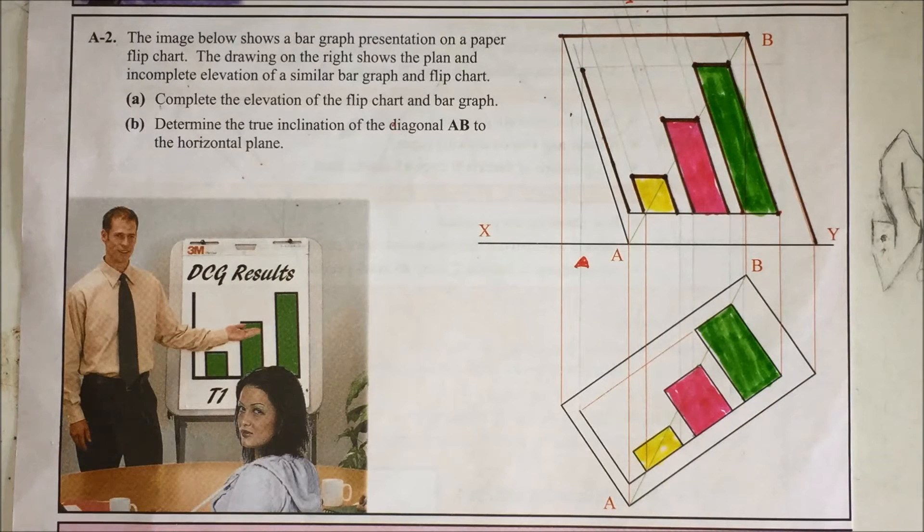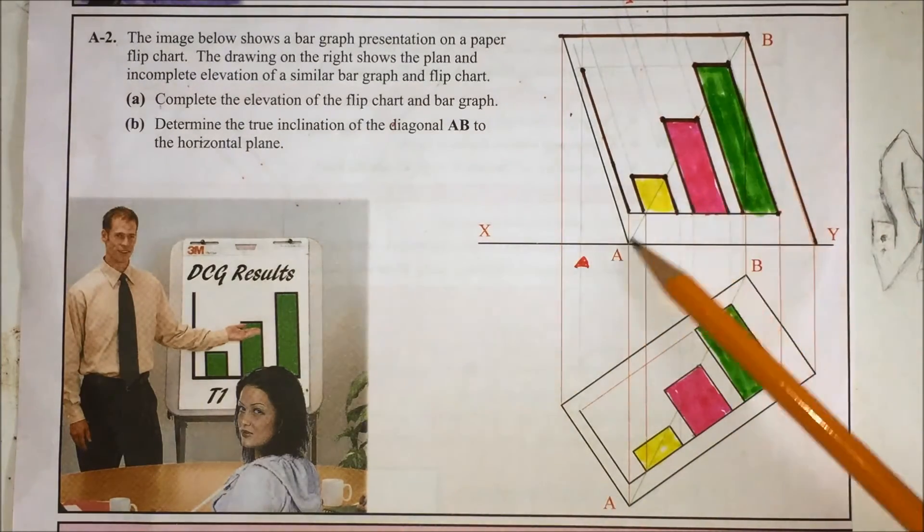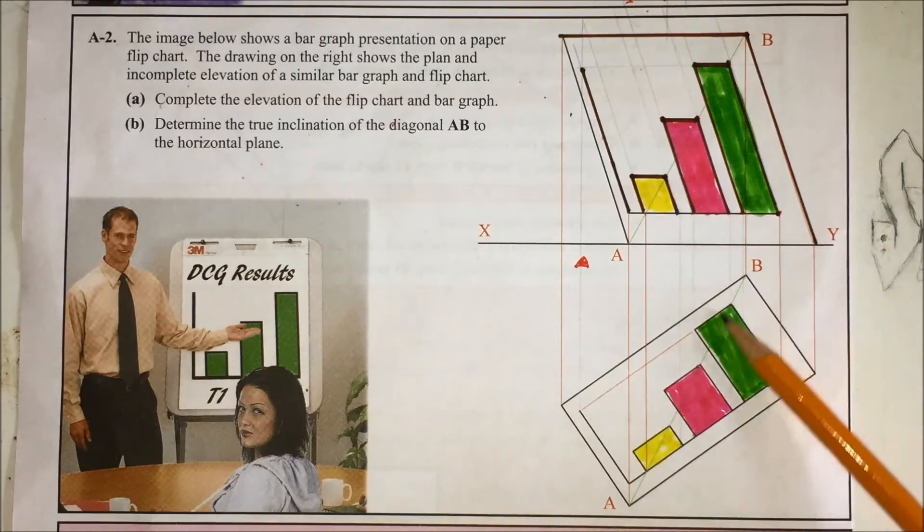Okay, that's part A. Now part B says determine the true inclination of the diagonal AB to the horizontal plane. So your horizontal plane is your XY line in elevation. There's your diagonal. That's not a true angle. You can't give that angle there as a true inclination because you see here it's not a true length, it's at an angle.